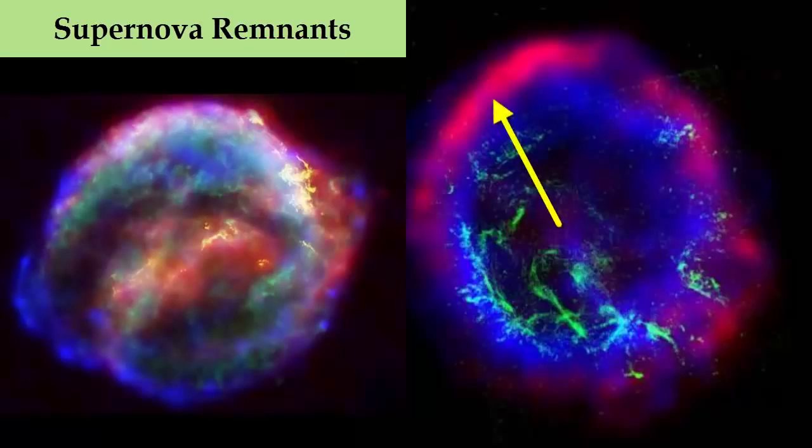One travels outward, shown in red and high in iron. The other rebounds back into the material ejected by the explosion, shown in blue and high in oxygen and neon. Dense clumps of oxygen that have cooled to about 30,000 degrees Celsius are shown in green.